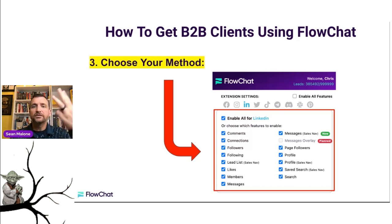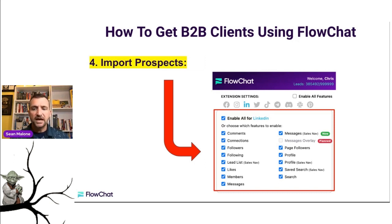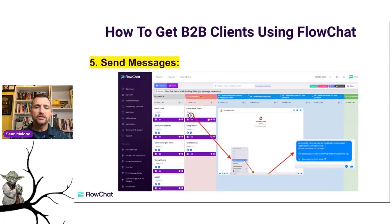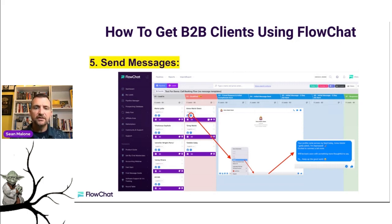We've built our pipeline, chosen our platform, chosen our method. Moving on to step four: now we just need to import the prospects. We have very simple tech — when you go to these places on social, you'll import these people right into your pipeline. Once we have them in there, we're ready to go. You can now see we've imported some people right into the pipeline and qualified a few of these people.